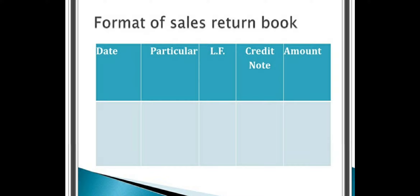The format of the sales return book includes: date, particulars, ledger folio, credit note number, and amount. In the date column we post the date, in the particulars column we write all details regarding the sales return, in ledger folio we post the page number, in the credit note column we write the credit note number, and in the amount column we post the final financial number.